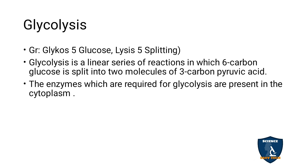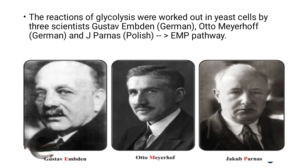Glycolysis takes place in the cytoplasm of the cell. It was first studied in yeast cells by three scientists: Gustav Meyerhof — a German scientist, Otto Meyerhoff — also German, and G. Parnas — a Polish scientist. Taking the first letters of their names: M, M, P — glycolysis is also called the EMP pathway.